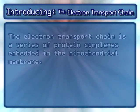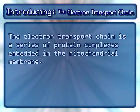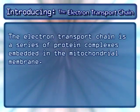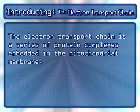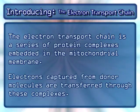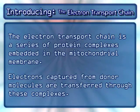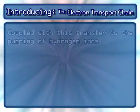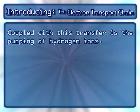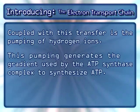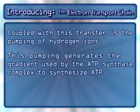The electron transport chain is a series of protein complexes embedded in the mitochondrial membrane. Electrons captured from donor molecules are transferred through these complexes. Coupled with this transfer is the pumping of hydrogen ions, which generates the gradient used by the ATP synthase complex to synthesize ATP.